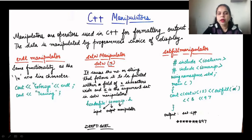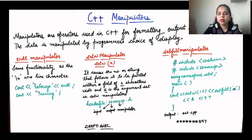The second manipulator is the setw manipulator, also written as setw(X). It specifies how many spaces you want to leave — setw(X). It causes the number or string that follows it to be printed within a field X characters wide, where X is the argument set in setw. It acts as a horizontal tab — how many spaces on the horizontal line you want to insert or leave is set by setw(X).